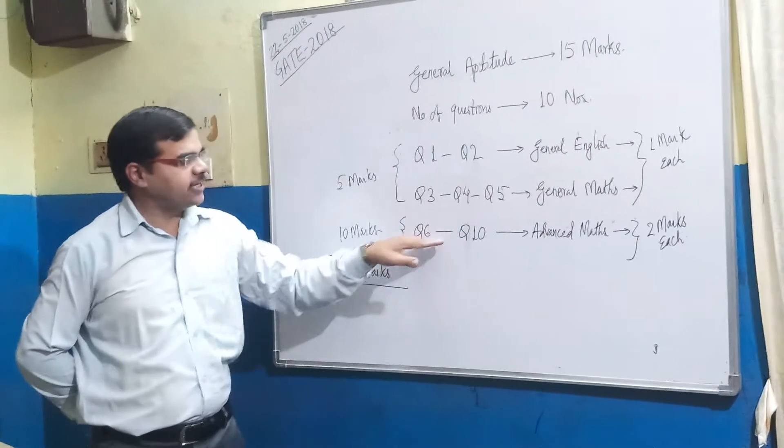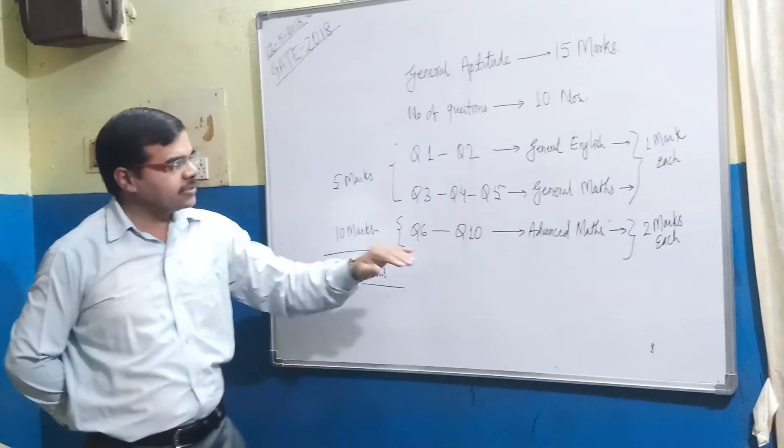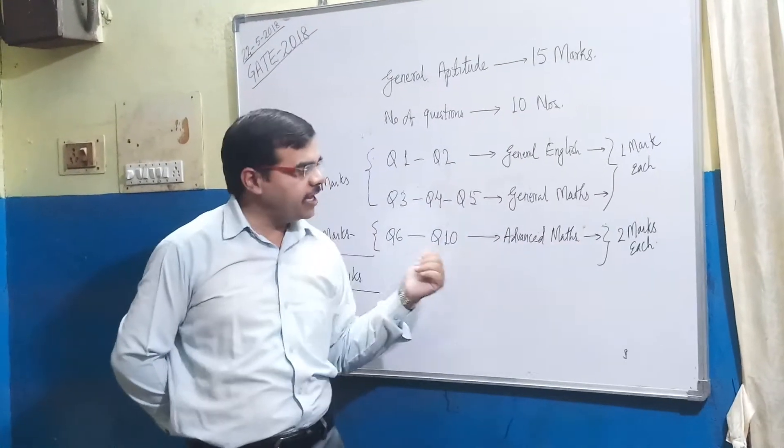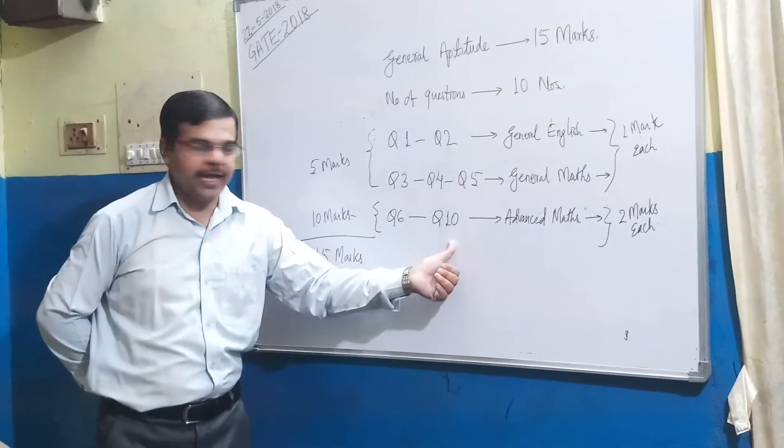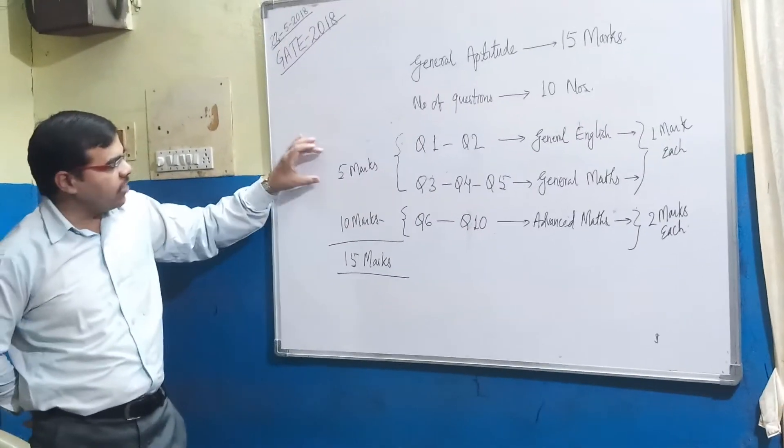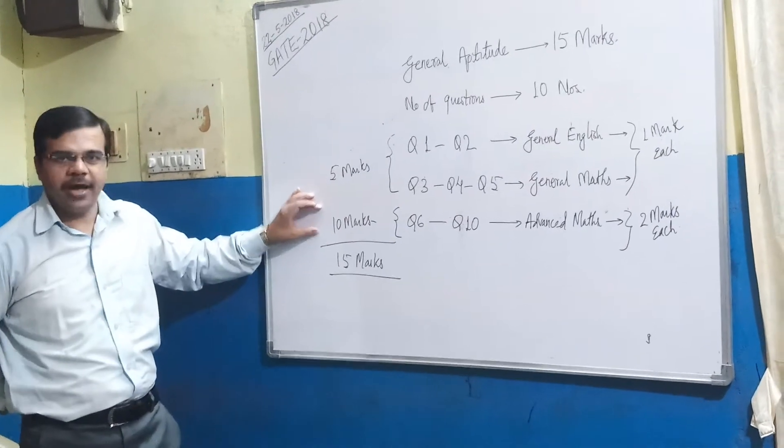Similarly, from question 6 to question 10, it is of Advanced Maths and each carries 2 marks. So question 6 to question 10, if you are seeing, it is of 10 marks. So total we are having 5 marks plus 10 marks, total it is of 15 marks.